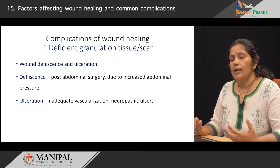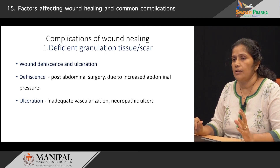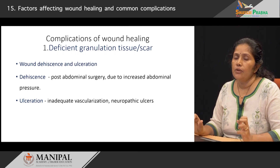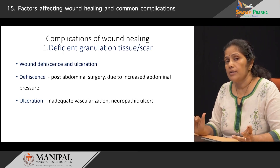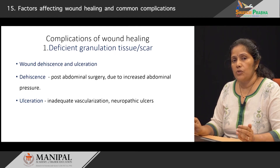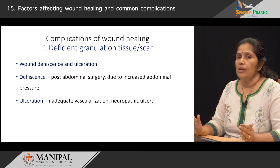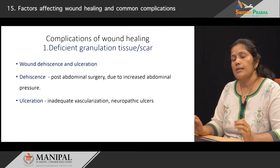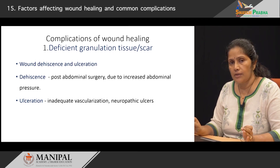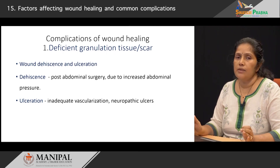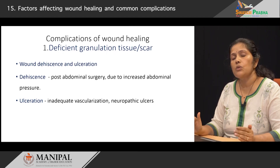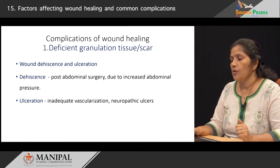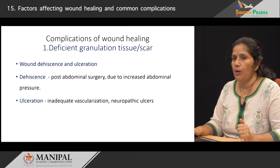Why does ulceration occur? Ulceration usually occurs when there is inadequate vascularization — that is, there is not enough vascularity for the wounds to heal. The second reason is when the patient has certain neural problems, as you can see in leprosy patients or patients who have spinal cord injury. We call these neuropathic injuries, where there is decreased sensation and the patient does not realize when there is repeated injury. In both these conditions we can see ulcers which will not heal very fast.